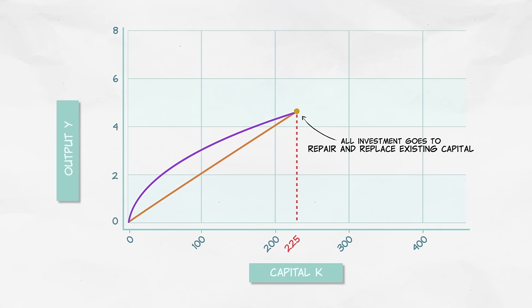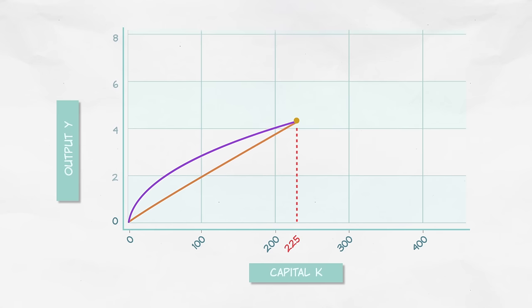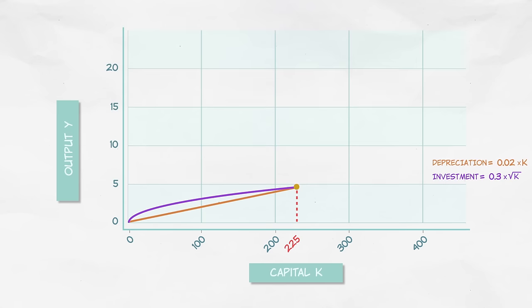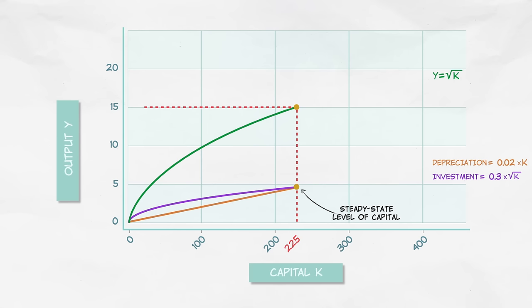Now remember, we've assumed that all the other variables in the model are not changing. So if the capital stock isn't growing, nothing is growing. In other words, when we reach the steady state level of capital, we have also reached the steady state level of output.